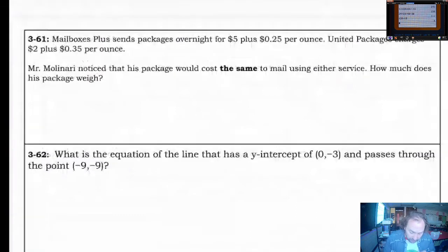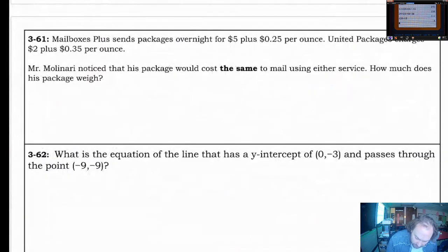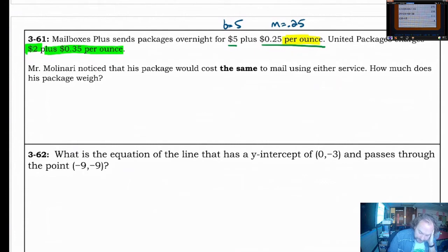Question 361. Mailbox Plus sends packages overnight for $5 plus .25 per ounce. When you see the phrase per ounce, that's got to jump out at you as the slope of this problem. And that would mean that B is going to be the 5. That's how it's going to start. We also know that United Packages charges $2 plus .35 per ounce. Mr. Molinari noticed that his package would weigh the same to mail using either service. So how much does his package weigh?